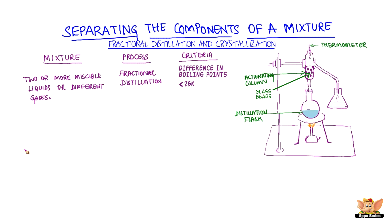When the mixture in the distillation flask is heated slowly, the liquids get vaporized and condensed when their boiling points are reached.